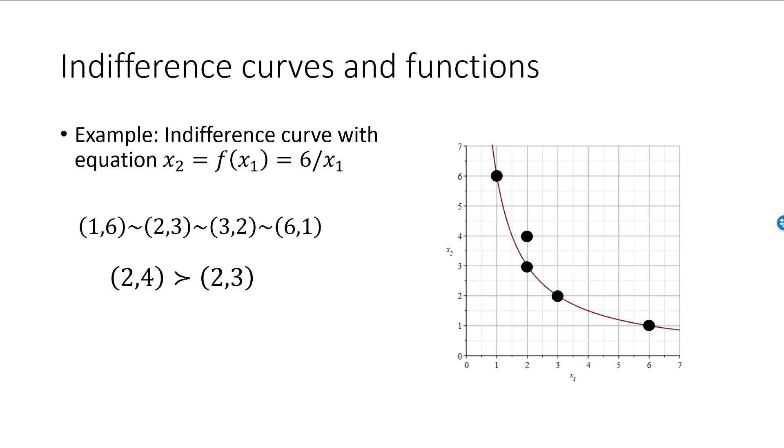This bundle contains the same amount of good one, but more of good two compared to the bundle (2, 3) just below it, which is on the indifference curve. By strict monotonicity, the bundle (2, 4) must be strictly preferred to the bundle (2, 3).